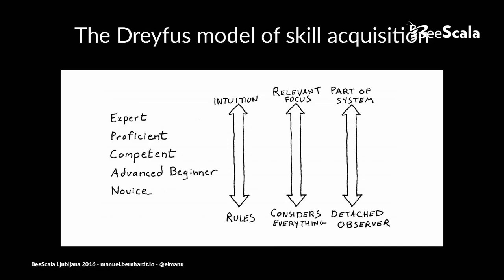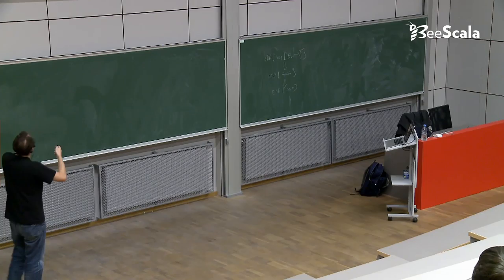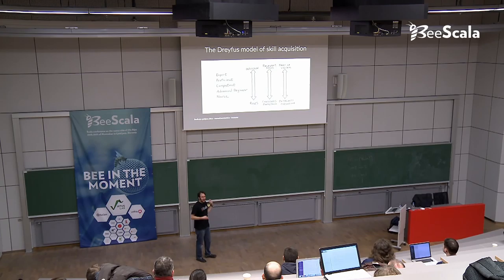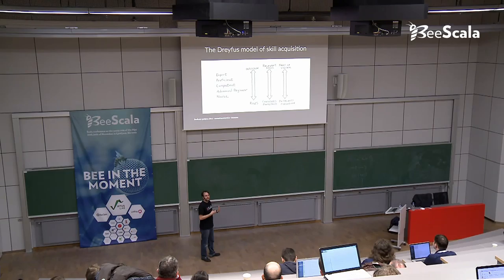The Dreyfus Model of Skill Acquisition works like that. You have a scale from novice to expert and you have different things here. And what the model basically says is you start as a novice, you will adhere to rules. You will look at rules to get stuff done. But as you get more proficient and you become an expert, you will trust your intuition much more often. You will not look things up or look at how exactly someone on Stack Overflow, even though it's really convenient to have Stack Overflow, but you will rely less on this and rely more on your intuition to get stuff done.